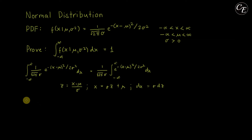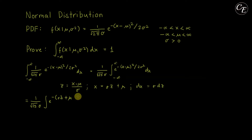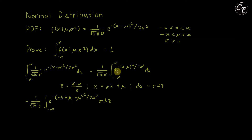Our transformed integral is 1 over square root of 2 pi sigma, times the integral of e raised to negative (sigma z plus mu minus mu) squared over 2 sigma squared, times sigma dz, from negative infinity to positive infinity. When x is negative infinity, z is negative infinity, and when x is positive infinity, z is positive infinity.